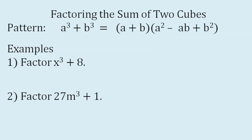In factoring the sum of two cubes, we have this pattern: A cube plus B cube equals the quantity A plus B times the quantity A squared minus AB plus B squared. The factors are one binomial factor and one trinomial factor.